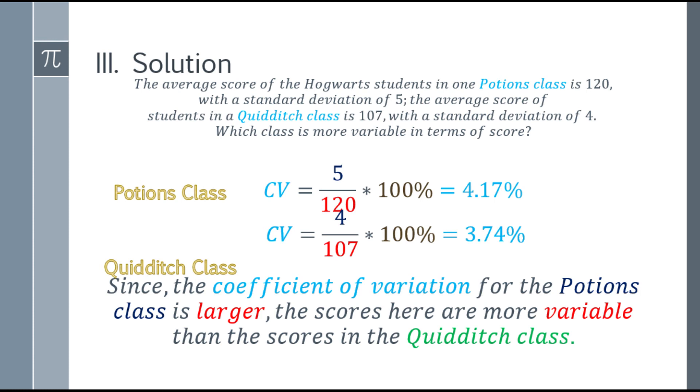Since the coefficient of variation of the Potions class is higher than the Quidditch class, the scores of the Potions class are more variable compared to the Quidditch class.